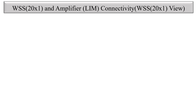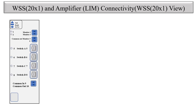Now let's see WSH20X1 and amplifier connectivity — the WSH20X1 view. You can see this is the line diagram of WSH20X1, in which there is a switch port: switch A, B, C, D, which are the physical port numbers 5, 6, 7, 8. The four ports are the MPU ports — these are the monitor ports, the common monitor ports — and this is the common in and common out port number 10.